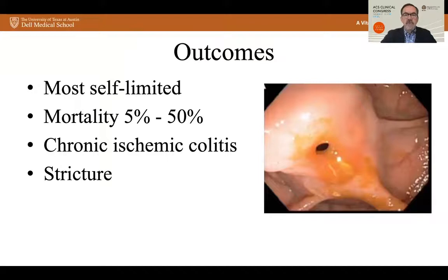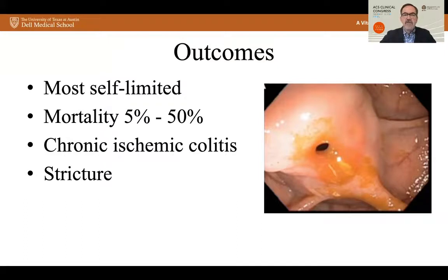Regarding outcomes, most of these cases are self-limited. There is a mortality of 5% to 50%, which goes up significantly with more severe presentations. Patients may develop chronic ischemic colitis with recurrent bouts, and stricture can develop in an area of prior ischemic colitis.